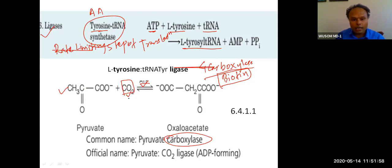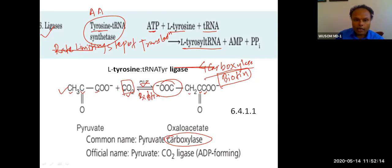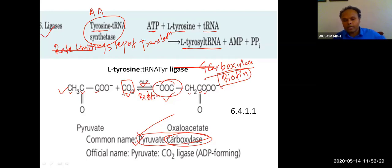Using biotin, carboxylases catch CO2 and add it to a molecule. For example, pyruvate carboxylase adds a carboxyl group to pyruvate, which has three carbons. The carboxyl group is added to the third carbon. This enzyme is a ligase, utilizing ATP, and is assigned EC number six.